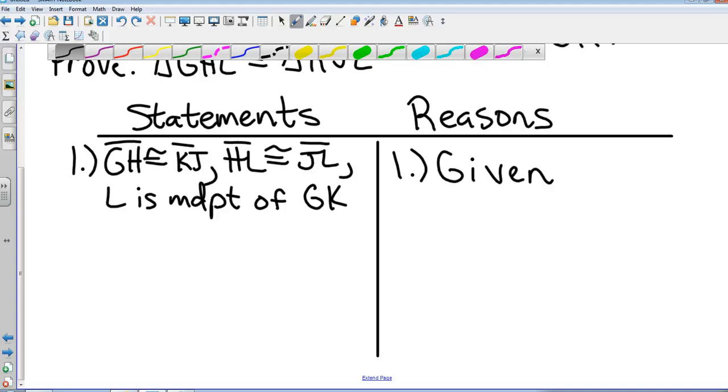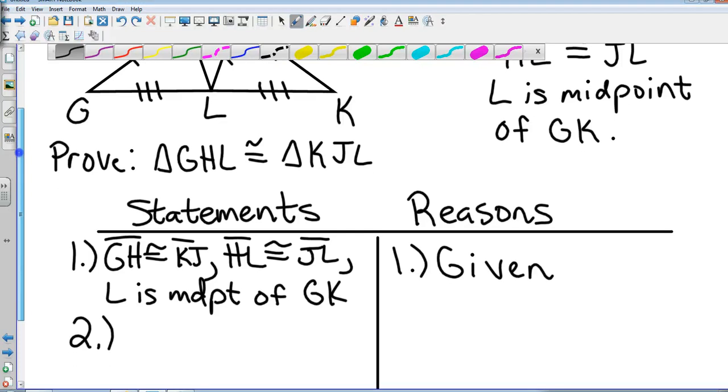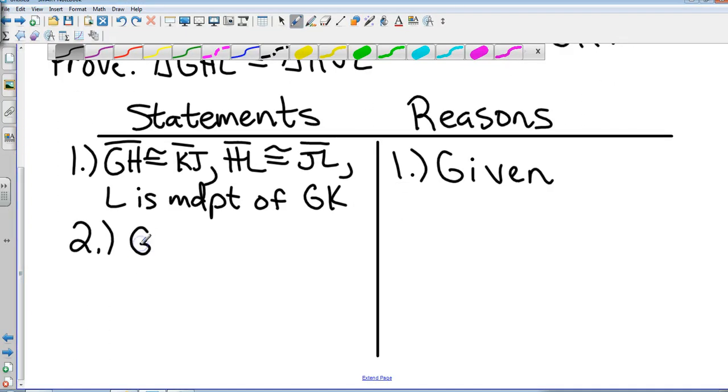Step number two: let's take something from our given statement and prove it. What can we take from our given statement that's not actually proven? Well, they've told us L is the midpoint, but what does it create? It creates GL is congruent to LK. What's the reason for that? Definition of midpoint.